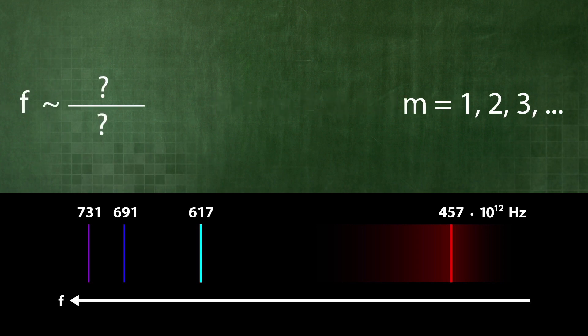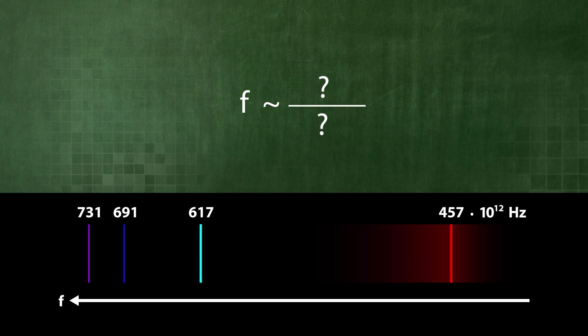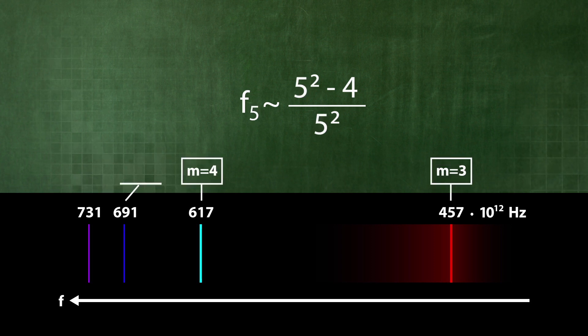We do not know how Balmer came up with his formula. He discovered that the combination of m squared minus 4 divided by m squared correctly describes all frequencies for m equal to 3, 4, 5, and 6.